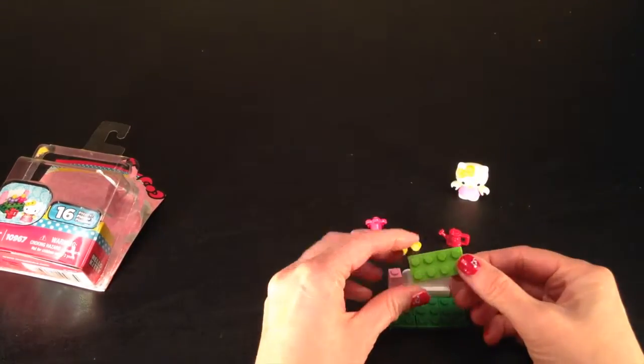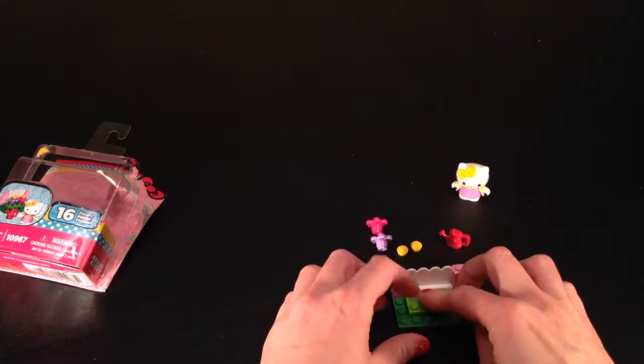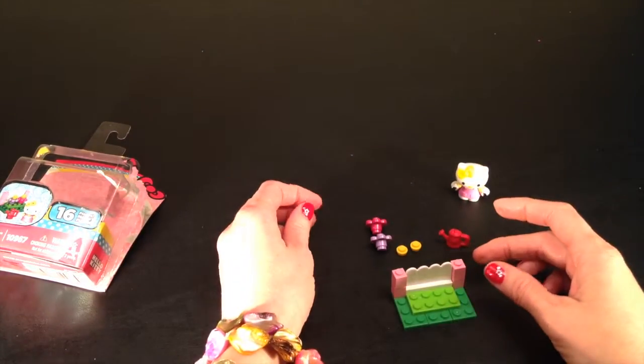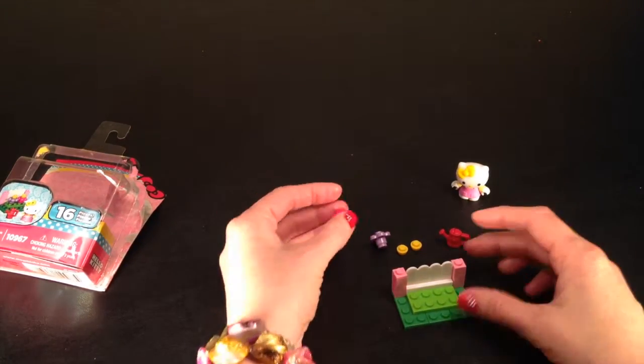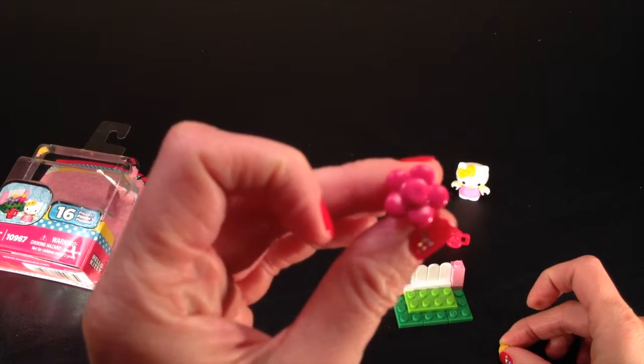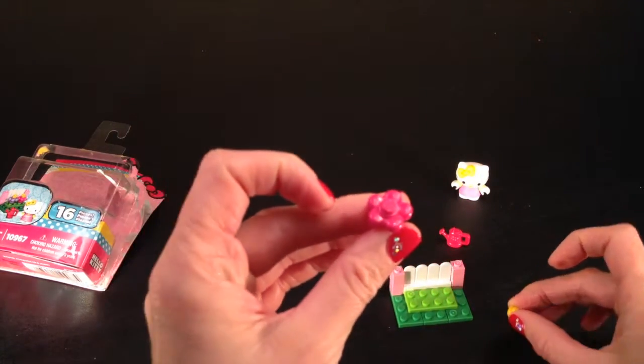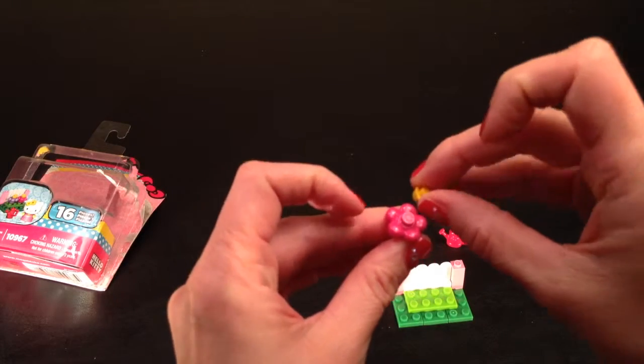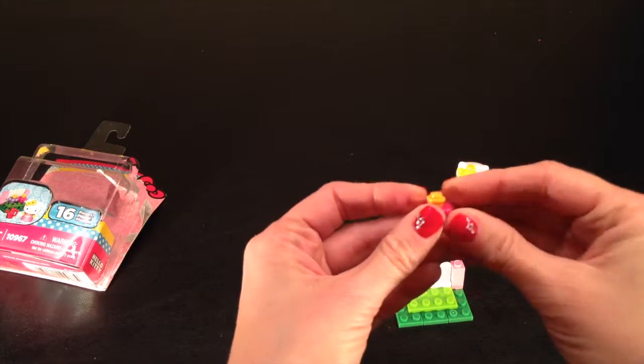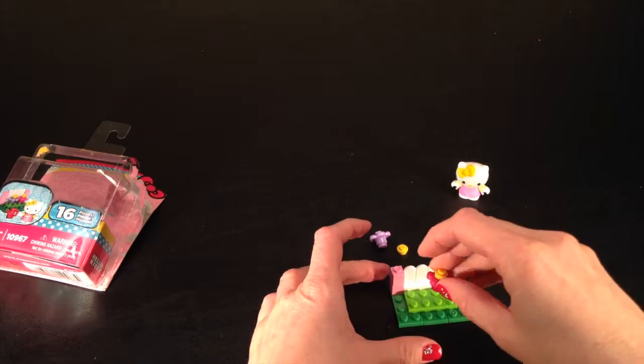Next we add our lighter green grass piece. And this piece is where we'll be planting our flowers. First we're going to take our pink flower. Let's just show that to you a little bit closer up. So pretty. And we put our yellow flower middle right like that. Then we add it to our garden.